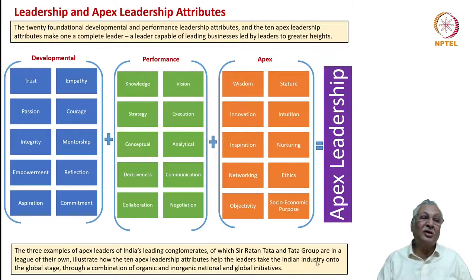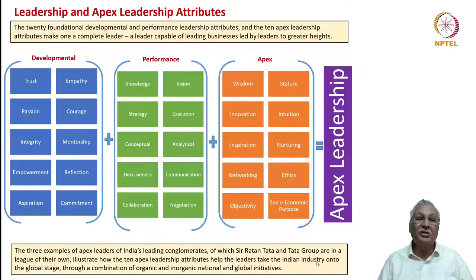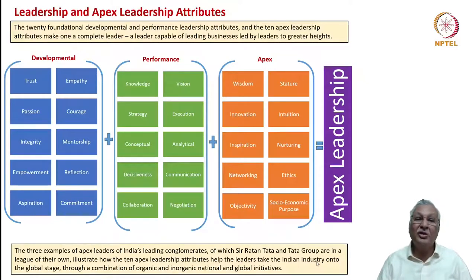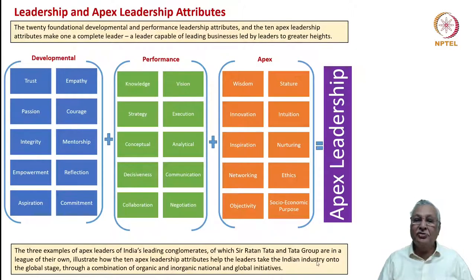In this lecture, we discussed that while leaders have these remarkable competencies, an apex leader — a leader of leaders at the very top as CEO or Managing Director — should have another 10 important apex leadership qualities. These are wisdom, stature, innovation, intuition, inspiration, nurturing, networking, ethics, objectivity, and socio-economic purpose. Together, these 30 qualities define apex leadership.